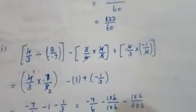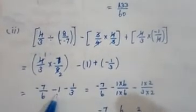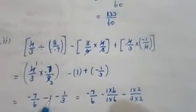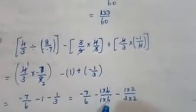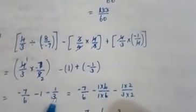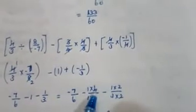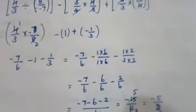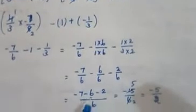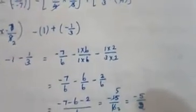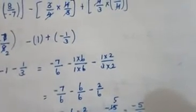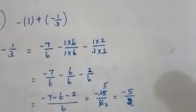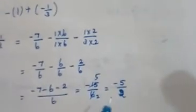Third bracket: plus × minus = minus, giving −1/3. So combining: −7/8 − 1 − 1/3. Treat 1 as 1/1. LCM of 8, 1, 3 is 24 — wait, LCM of 6 and 3 is 6. Multiply: −7/6 (×1), 1×6/6, and −1/3 × 2/2 = −2/6. Numerator: −7 − 6 − 2; all same sign, add: 7+6=13, 13+2=15; answer is −15/6. Cancel by 3: −5/2.